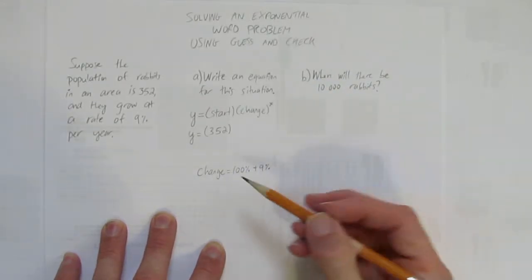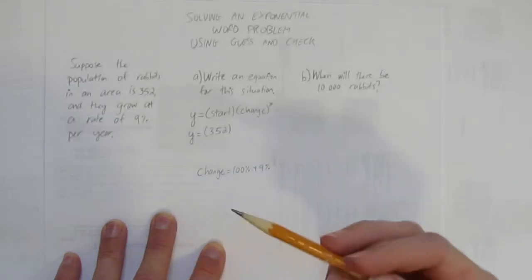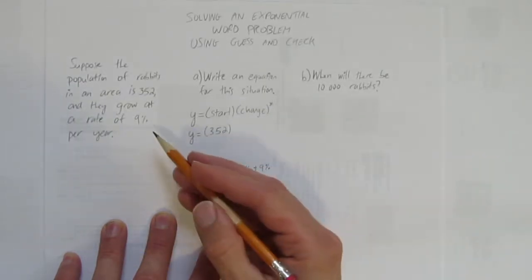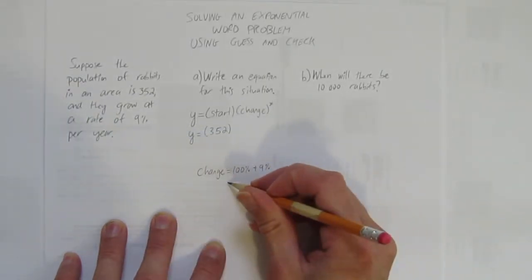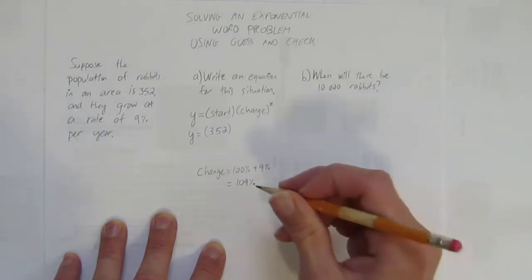Some of you may ask, what happens if some of the rabbits die? We assume that this growth rate takes into account that some are dying and some are being born, but overall they're growing at 9%, which means each year there's 109% of what there was last year.